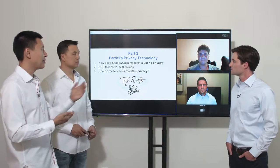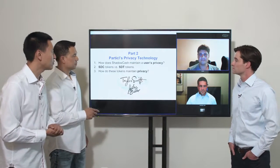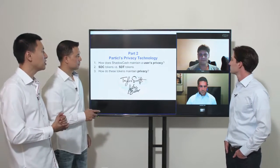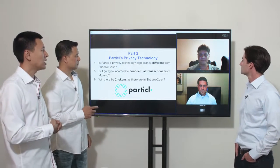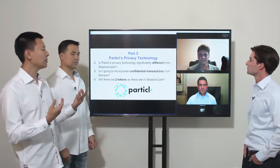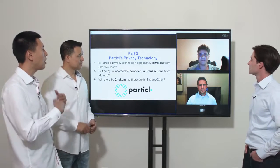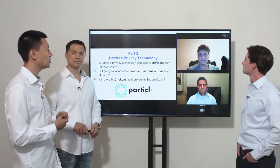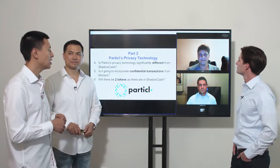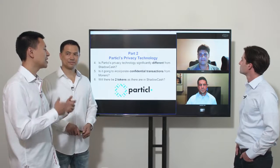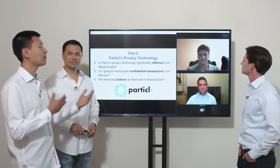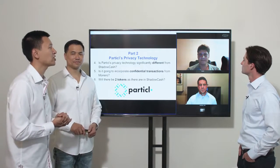So Rhino, for Particle, how is this going to be different from ShadowCache? What is Particle going to do that is the same or different from ShadowCache?